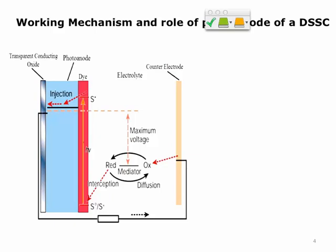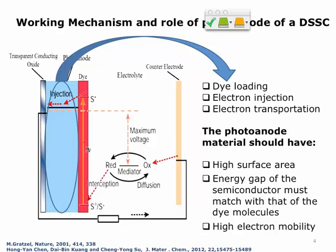When the electron is promoted from the HOMO to the LUMO, the dye gets oxidized and is reduced by the redox mediator electrolyte, which is in turn oxidized by the electron coming from the outer circuit. The photoanode material plays an important role in dye loading, electron transportation, and injection. For effective dye loading, it should have high surface area to absorb a large number of dye molecules and convert more photons to electrons. High electron mobility is also important since electrons in the photoanode move through a diffusion — essentially a random walk — process.